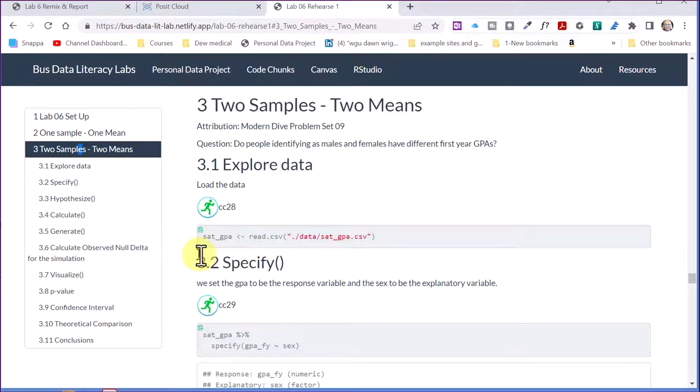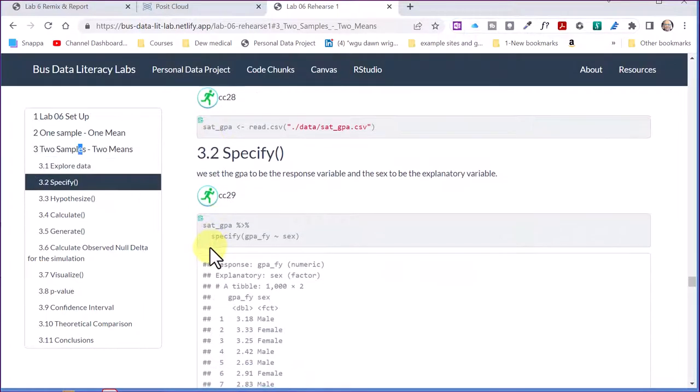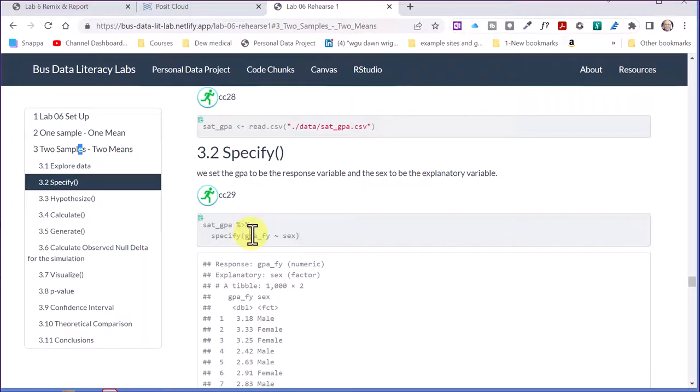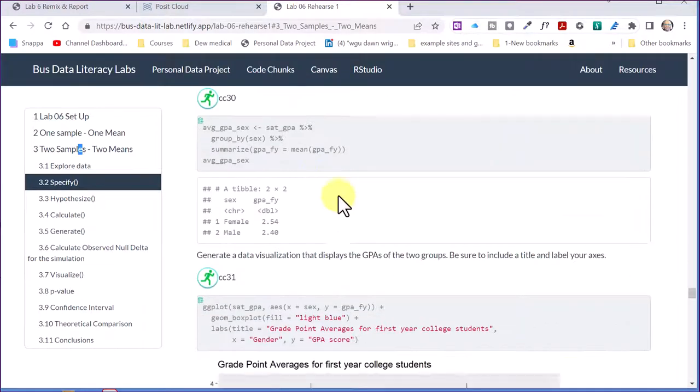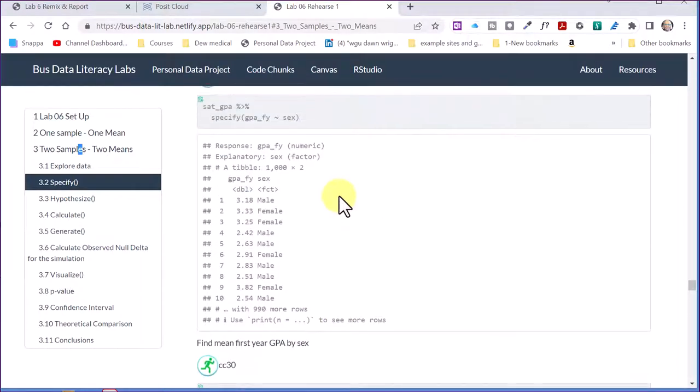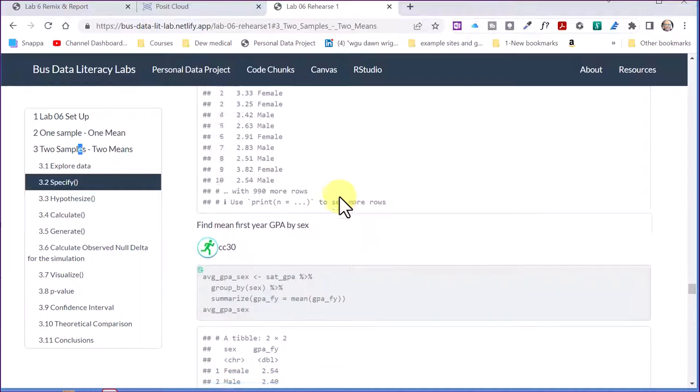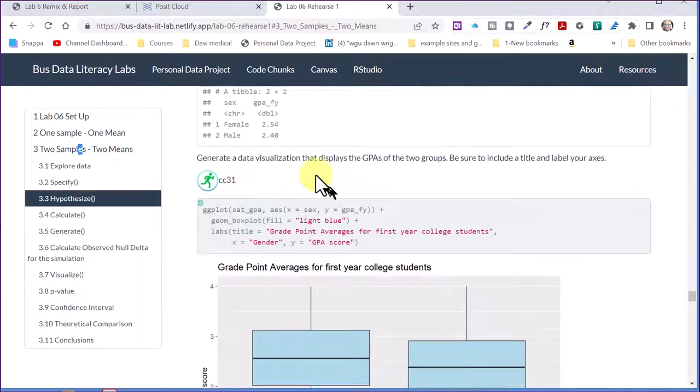We've already loaded the sat GPA. But then we're creating a version of that, a data object. And then we start to go through the invert process. This first one is specify the step, excuse me, specify the relationship between the two variables. And then just follow down these code chunks.